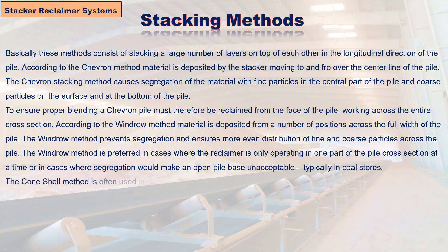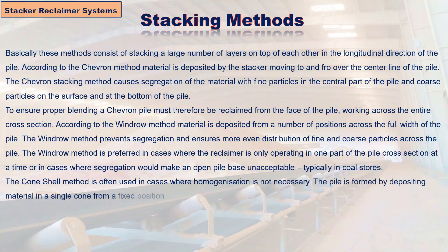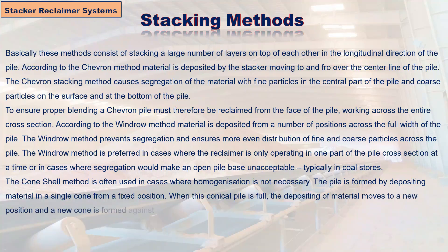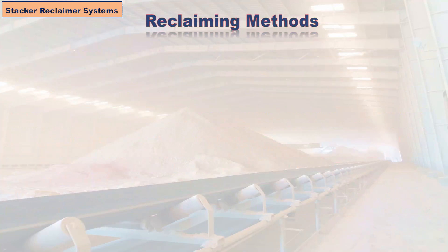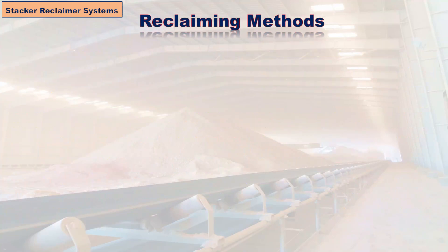The cone shell method is often used in cases where homogenization is not necessary. The pile is formed by depositing material in a single cone from a fixed position. When this conical pile is full, the depositing of material moves to a new position and a new cone is formed against the shell of the first one. This process continues in the longitudinal direction of the store until the stockpile is complete.